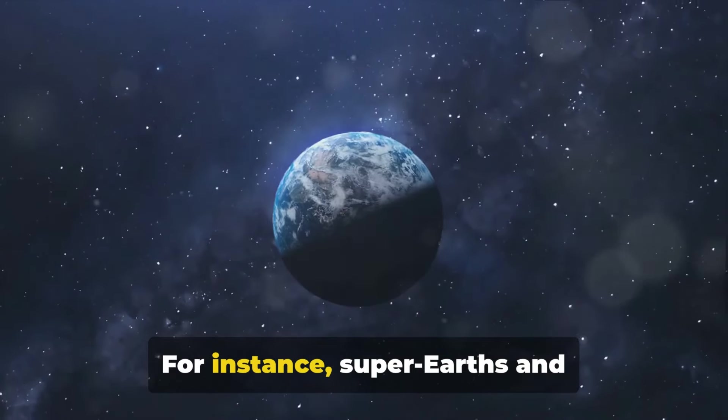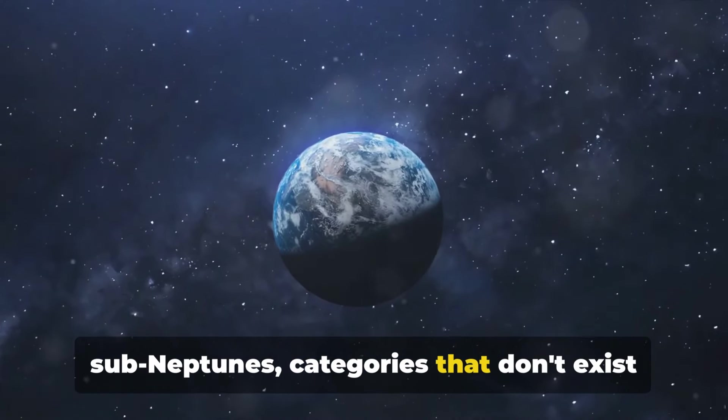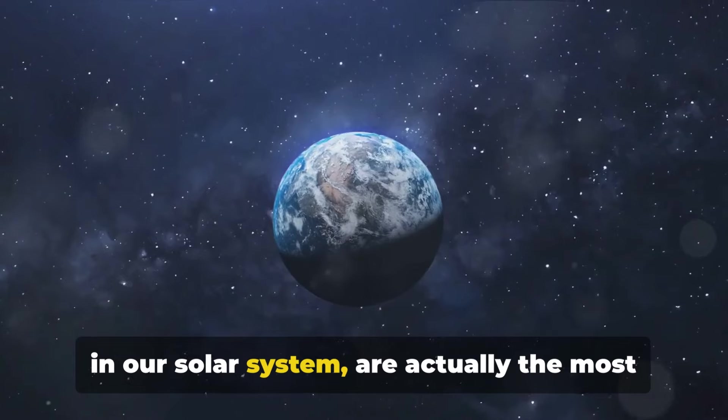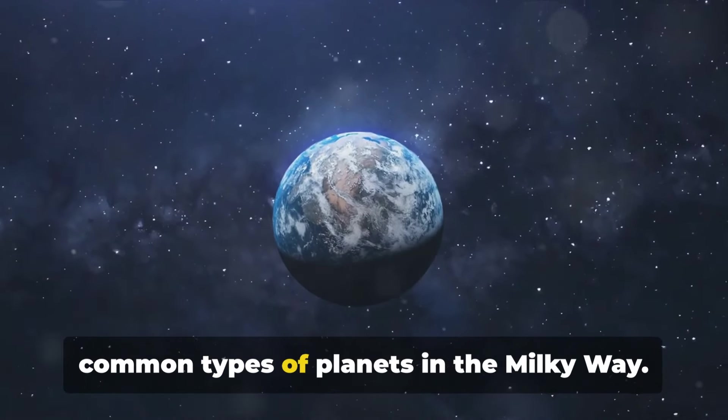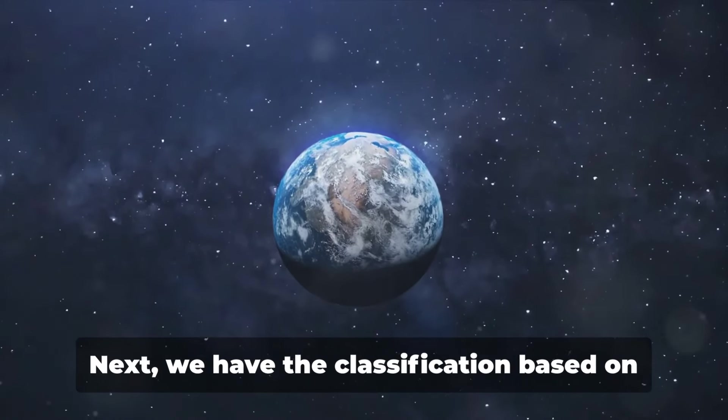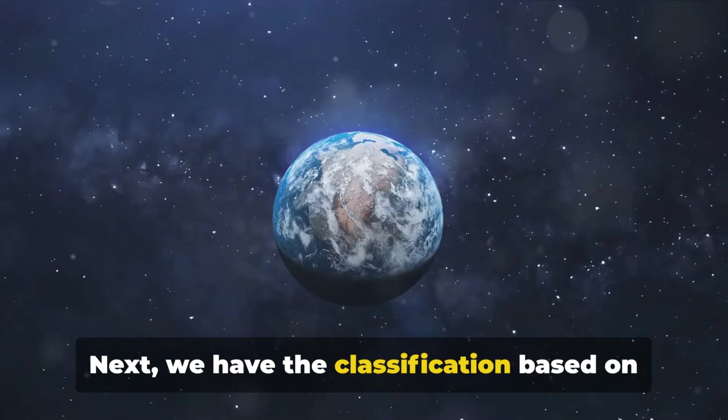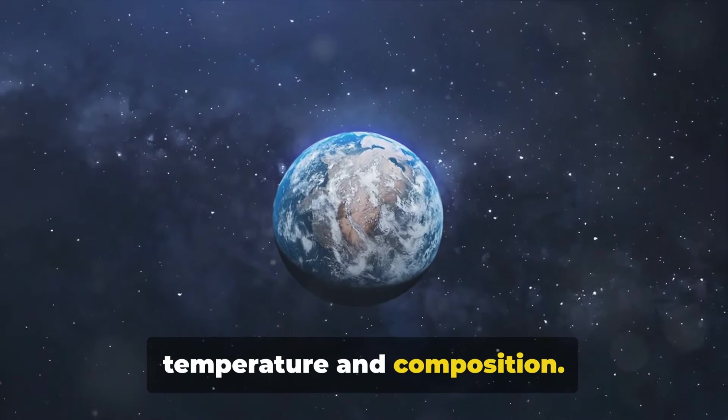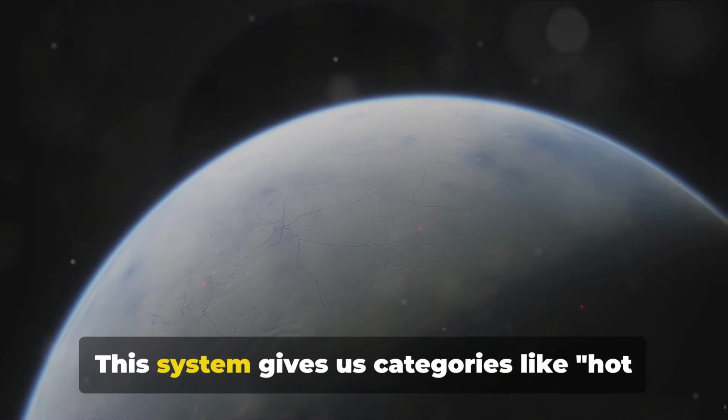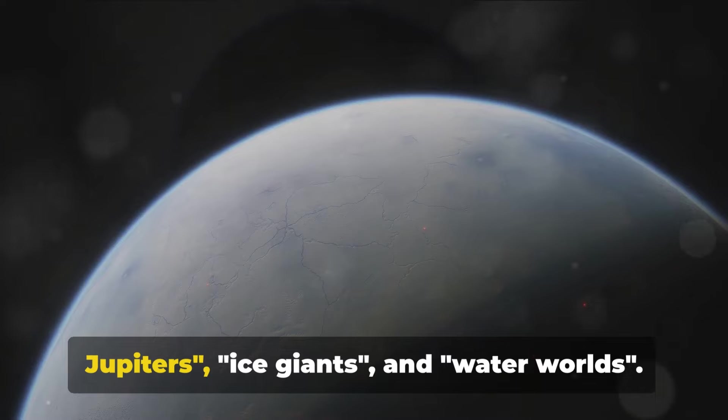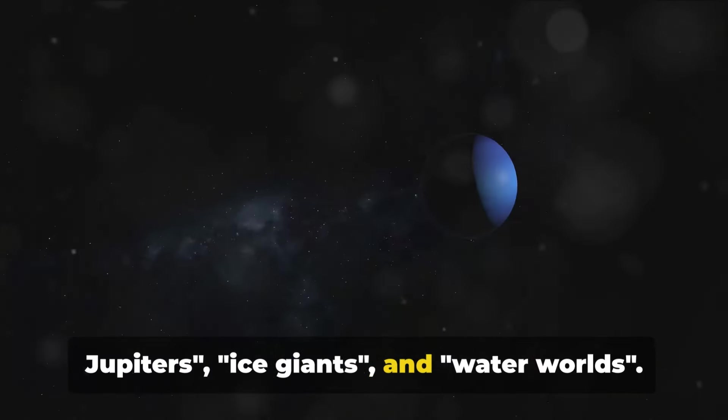These categories are based on what we know of our solar system, but the universe is vast and diverse. For instance, super-Earths and sub-Neptunes, categories that don't exist in our solar system, are actually the most common types of planets in the Milky Way. Next, we have the classification based on temperature and composition. This system gives us categories like hot Jupiters, ice giants, and water worlds.